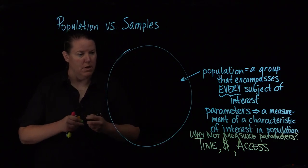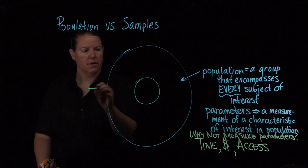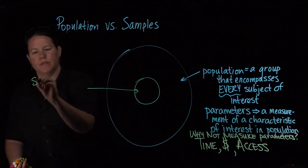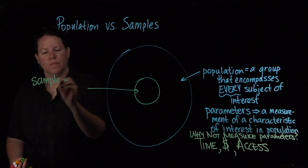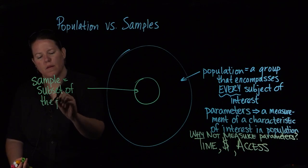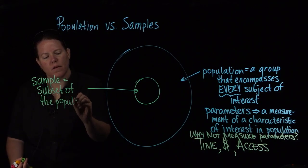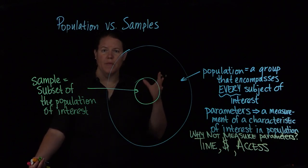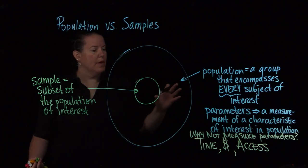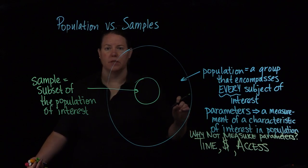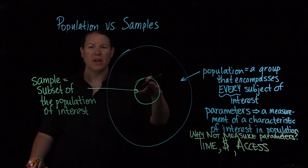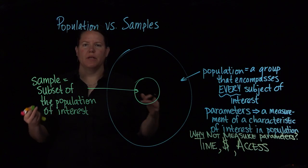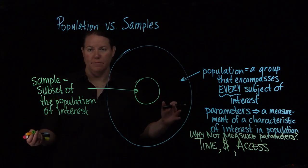So what we do instead is we take a subset of that population. And this is called my sample. And when I take a sample, I want that sample to have not only the characteristic of interest in common with the population, but I probably want it to be as indicative of the population as I possibly can get it.